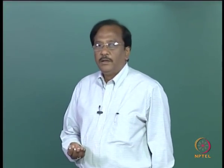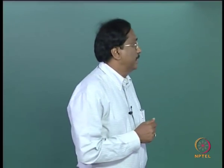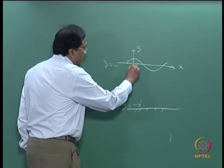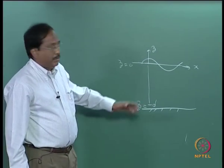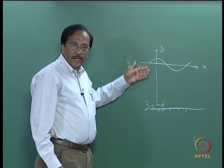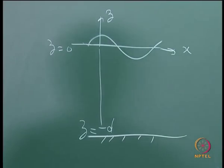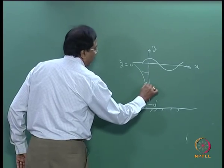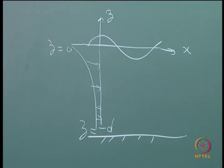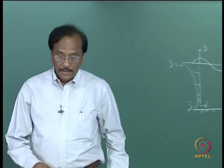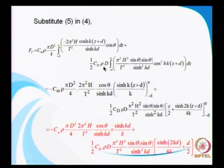The approximation is that the amplitude is small compared to the wavelength. The force is going to vary along the fluid medium along the depth, and we are talking only about the two-dimensional case. The wave force is expected to vary, and that variation is taken care of by z, which is found within the integration. Z is coming in the drag term as well, and the integration is from minus d to 0.